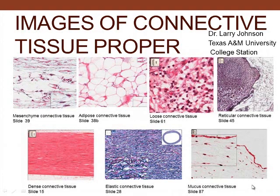Images of connective tissue. I'm Larry Johnson, a professor at Texas A&M University at College Station. Here we can see mesenchymal cells — connective tissue that serves as a source of precursor cells. You see these fibroblast-like precursor cells, fat cells with a visible nucleus, and other connective tissue cells such as neutrophils.